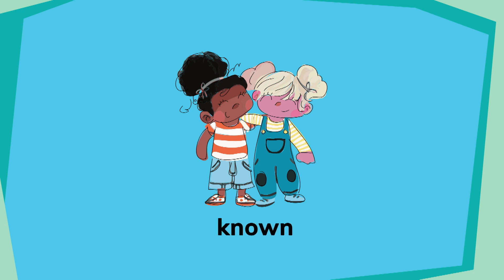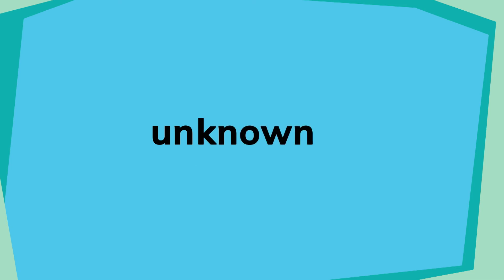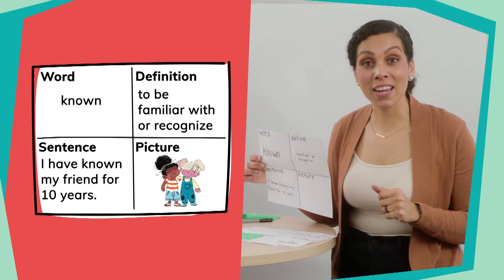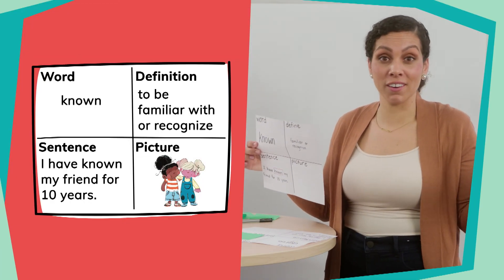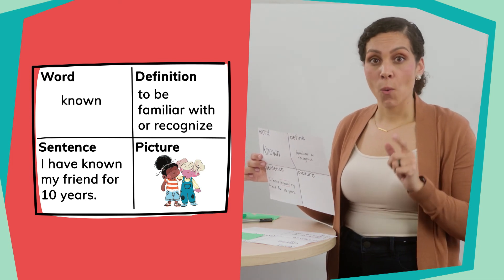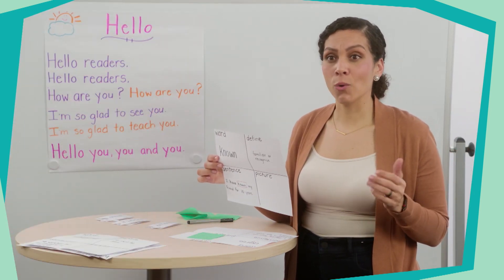If I know that 'known' means familiar or recognized, do you remember the prefix 'un' that means not? If I put 'un' in front of my word known, do you know what 'unknown' would mean? That's right — it would mean not familiar. And so that would teach me another word. What would your motion be for unknown or known?